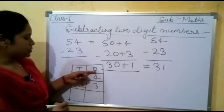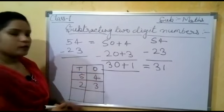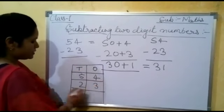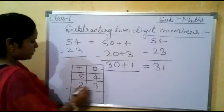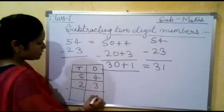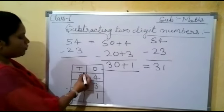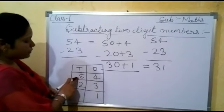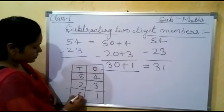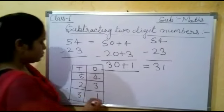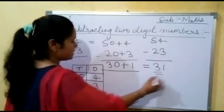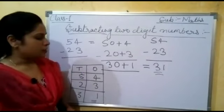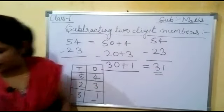Now we will subtract the ones: 4 minus 3 becomes 1. Then we will subtract the tens: 5 minus 2 becomes 3. So here you can see both the answers are the same — 31. In this way we can subtract. Now we can take one more example.